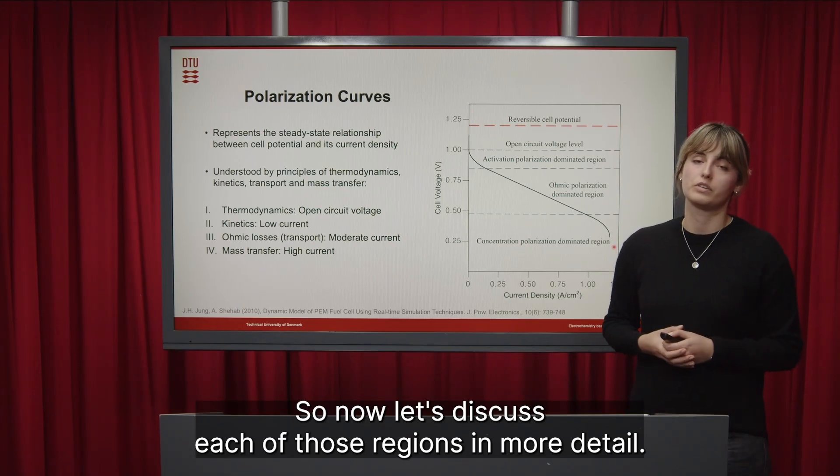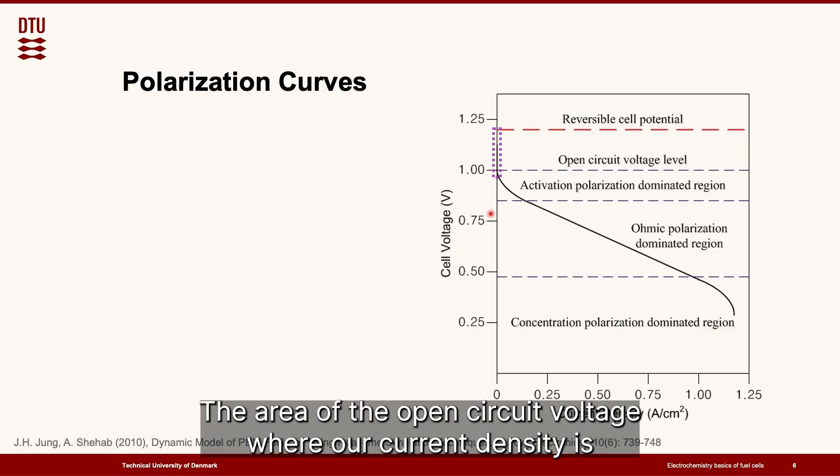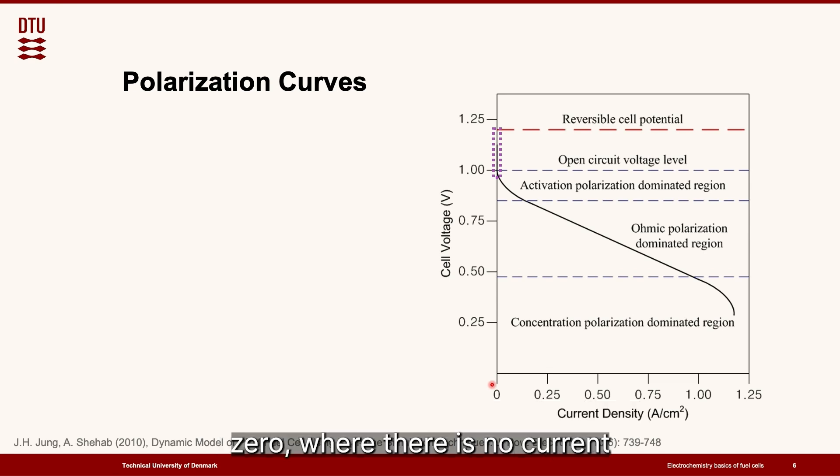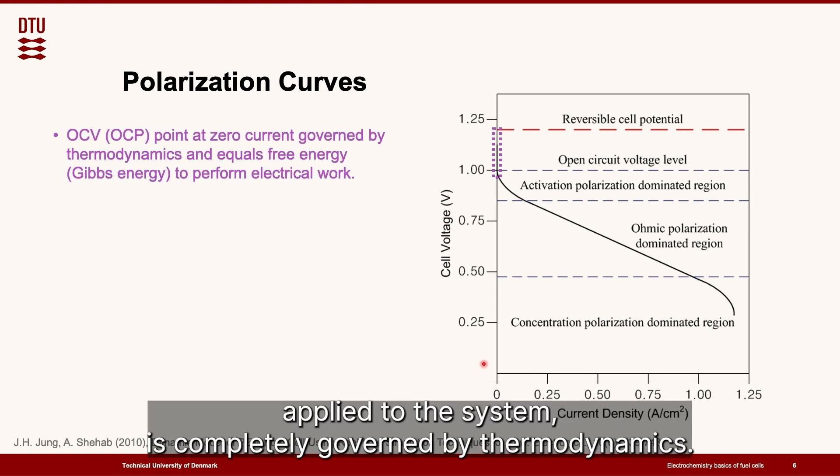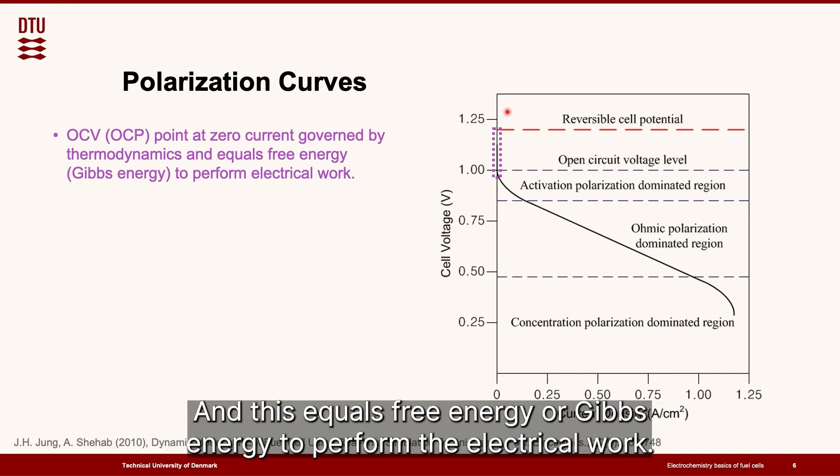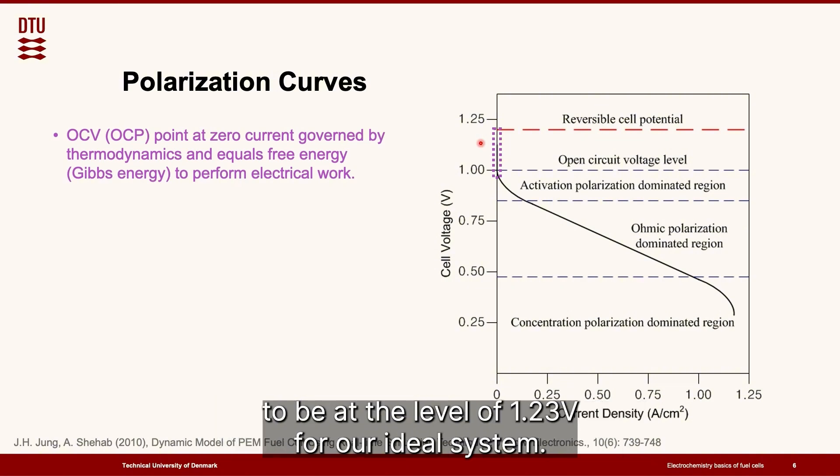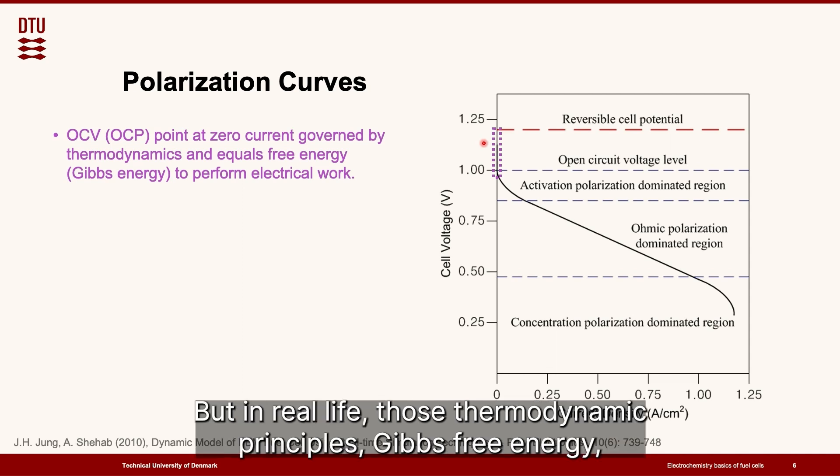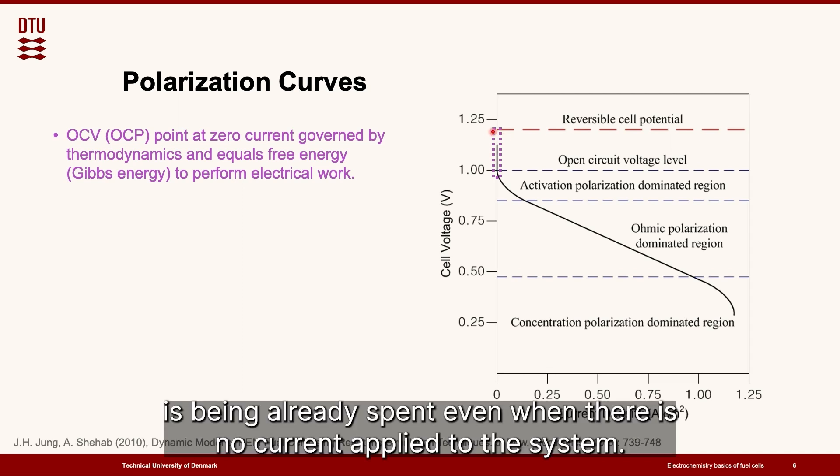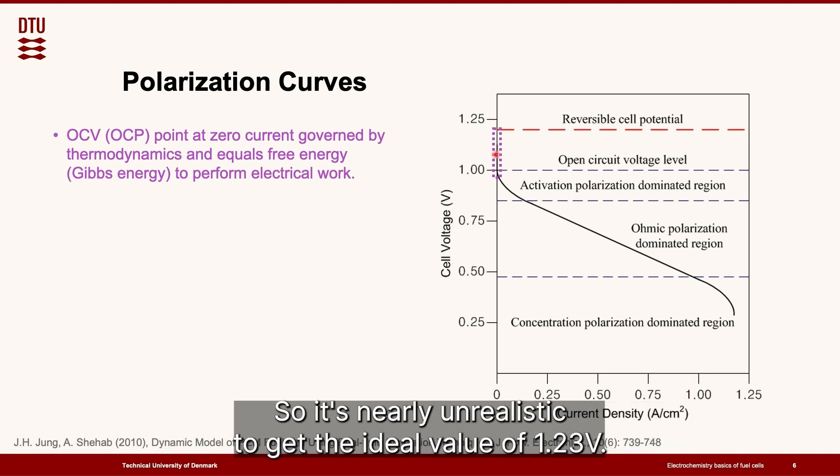So now let's discuss each of those regions in more detail. The area of the open circuit voltage where our current density is zero, where there is no current applied to the system, is completely governed by thermodynamics and this equals free energy or Gibbs energy to perform the electrical work. So ideally we would expect our OCV or OCP voltage or potential to be at the level of 1.23 volts for our ideal system but in real life those thermodynamic principles, that Gibbs free energy is being already spent even when there is no current applied to the system so it's nearly unrealistic to get the ideal value of 1.23 volts.